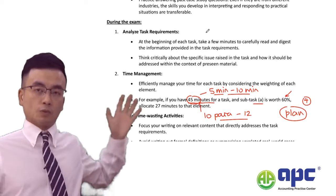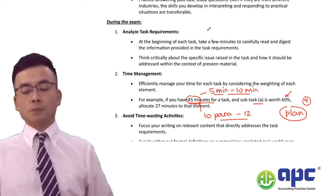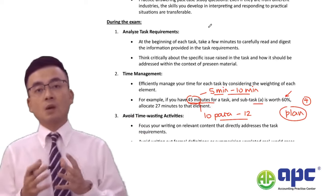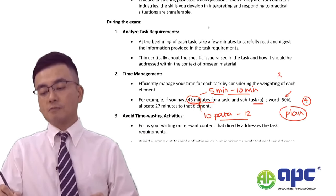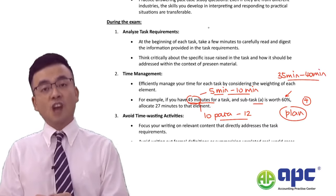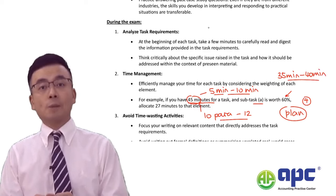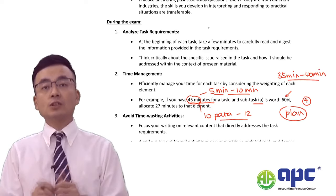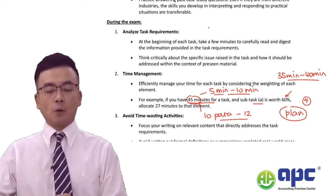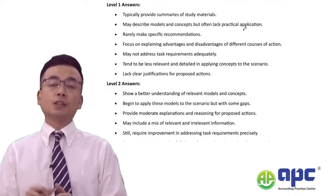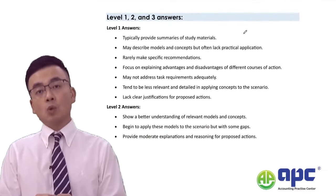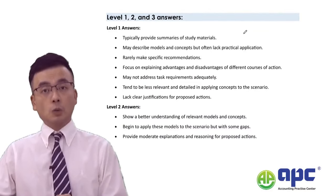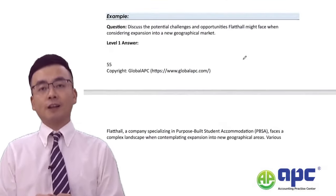Very importantly, if I were you, I would only spend approximately 35 to 40 minutes to finish one particular task or question in the exam, and devote some time to planning. CIMA has published guidelines for Level 1 to 3 answers. I've applied these to the company FlapTor. Let's see: if the question asks you to discuss the challenges and potential opportunities FlapTor may be facing, let's look at a Level 1 answer — which gets very few or no marks.